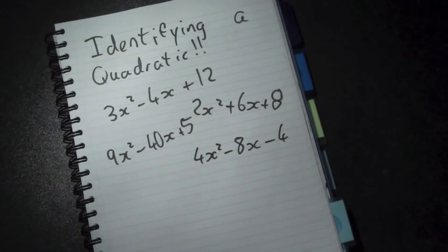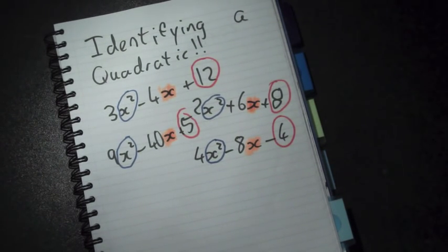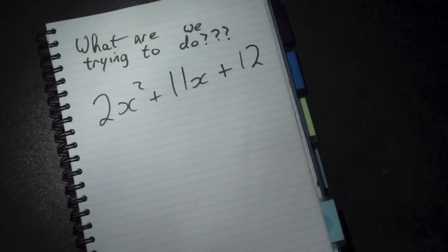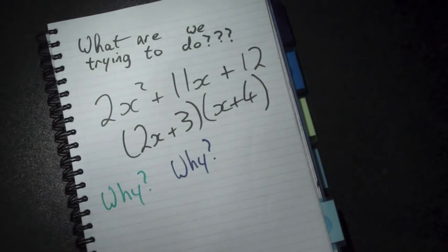What do we notice about these expressions? Well, each expression has an x squared, an x, and a number. And what exactly are we trying to do with these quadratics? Well, like other types of factorising, we want to turn this into this. And why do we want to do this? I'm going to let you figure that out for yourself.